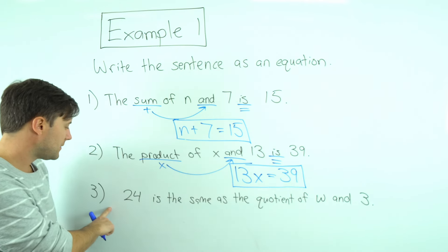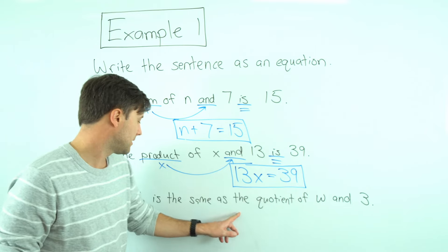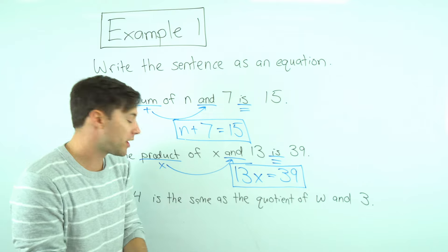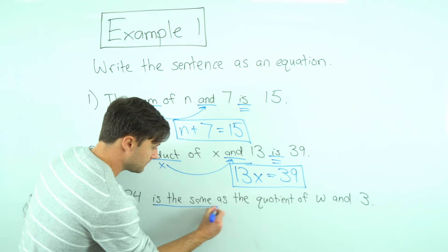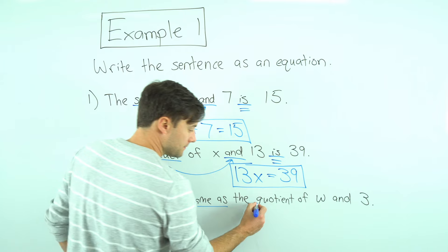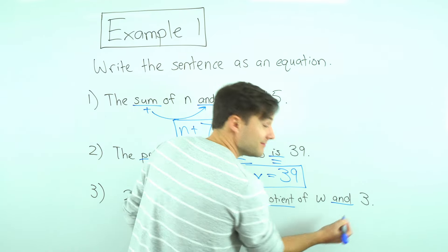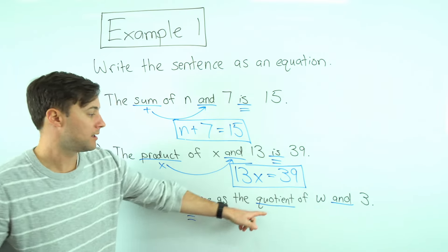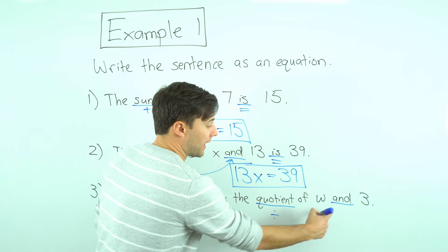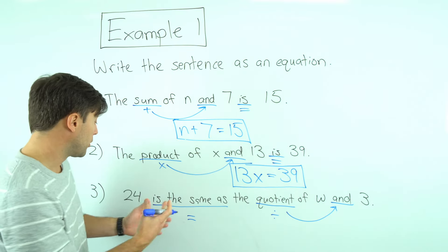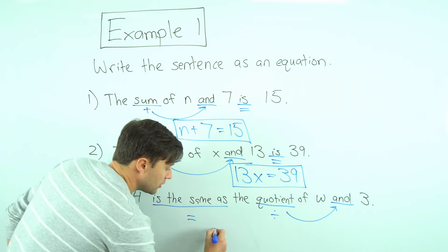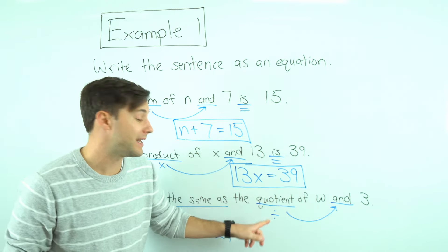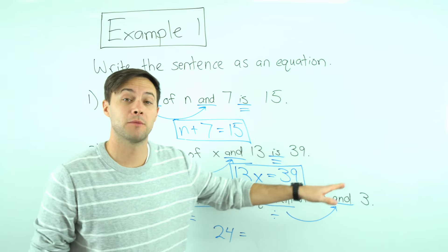Last one. Number three. Twenty-four is the same as the quotient of w and three. Keywords. It's the same as, quotient, and. That means equals. Quotient is division, and is where that division goes. So we're going to start with twenty-four. Twenty-four equals the quotient. What are we dividing? W divided by three.